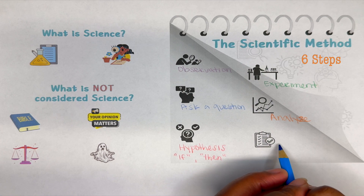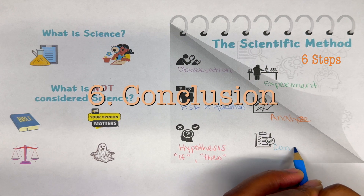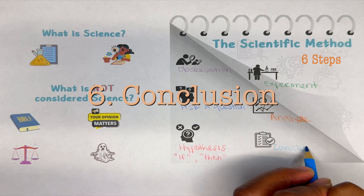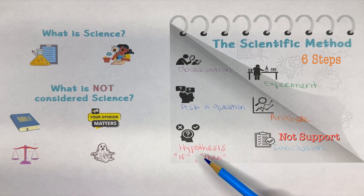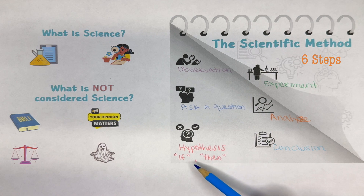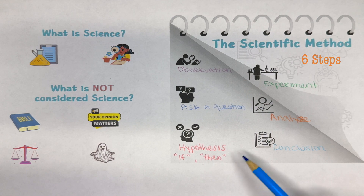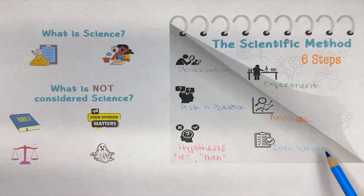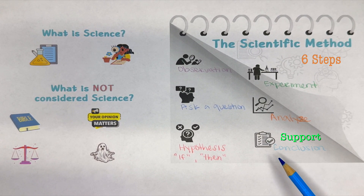The last — sixth — step of the scientific method is the conclusion. The conclusion is either going to support or not support your hypothesis. Either it changed or it did not change. Your conclusion will either support or not support your hypothesis.